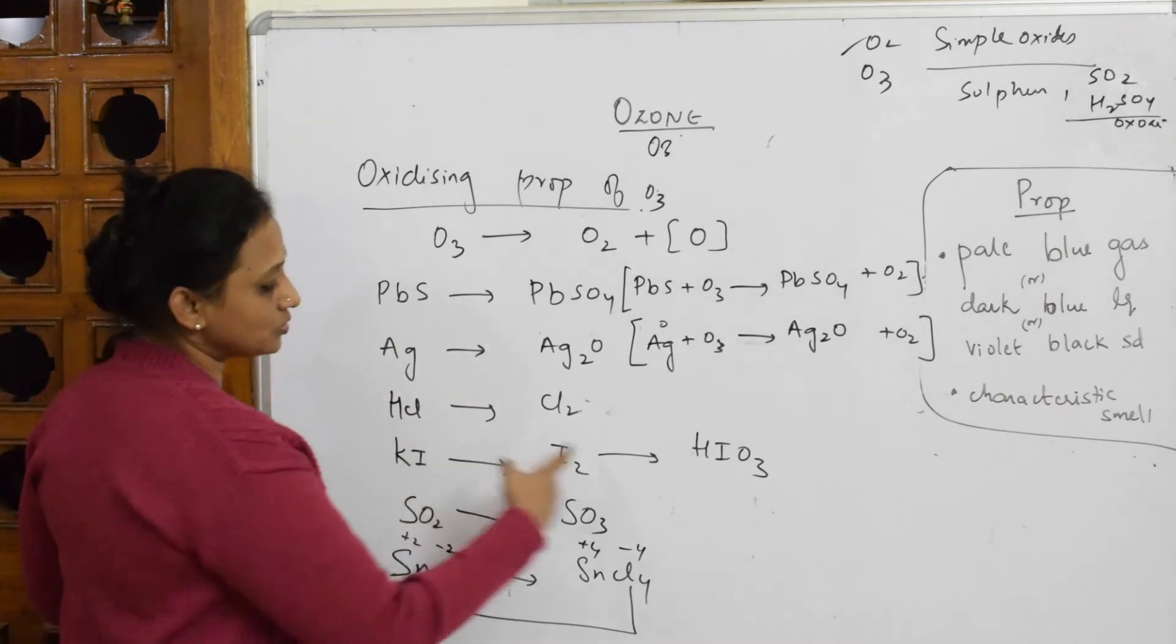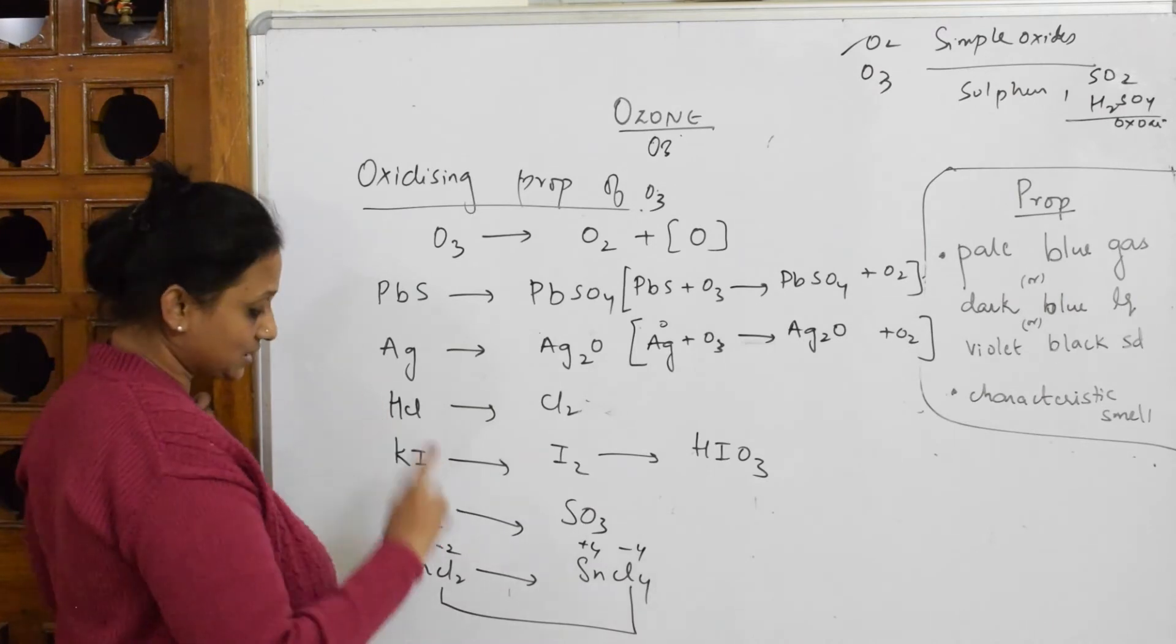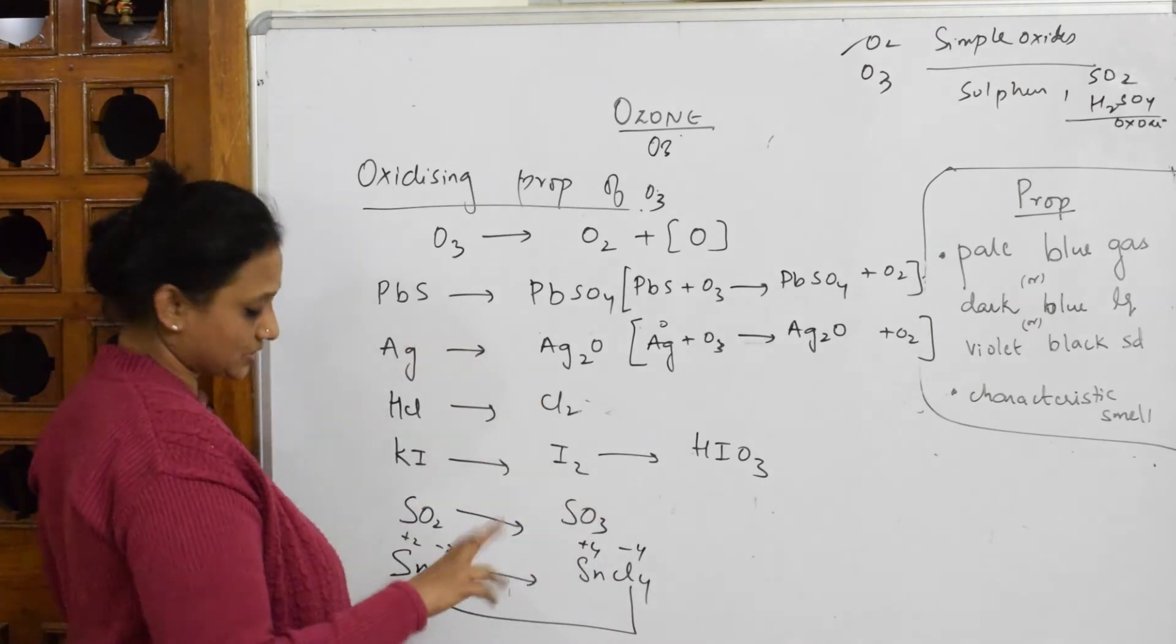Here you will add ozone. You will get oxygen here and KOH also. Watch that video please. Sulfur dioxide plus ozone gives sulfur trioxide.